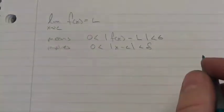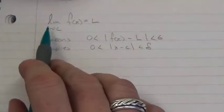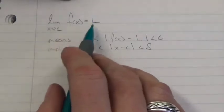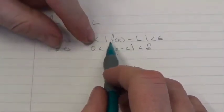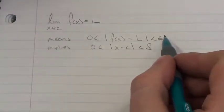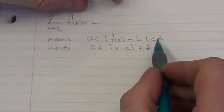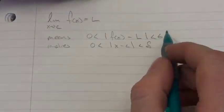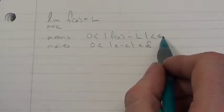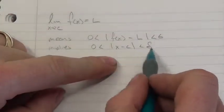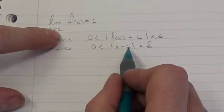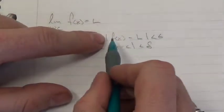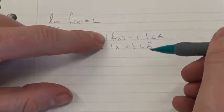Once again we're looking at limits and the epsilon-delta definition of a limit. If we're taking the limit as x approaches c and we know that equals L, that means the absolute value of f(x) minus L is less than some epsilon — some tolerance — and we can make that as small as we want. We want to show that no matter what we pick for epsilon, that implies the existence of a delta, so that as long as x is within delta of c, f(x) is within that tolerance of L.